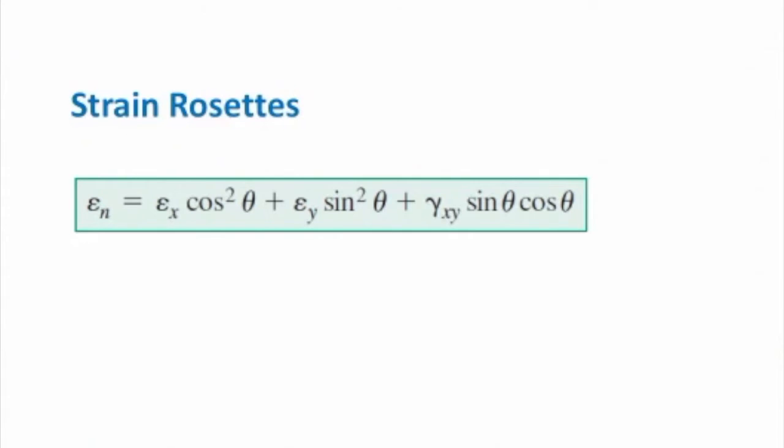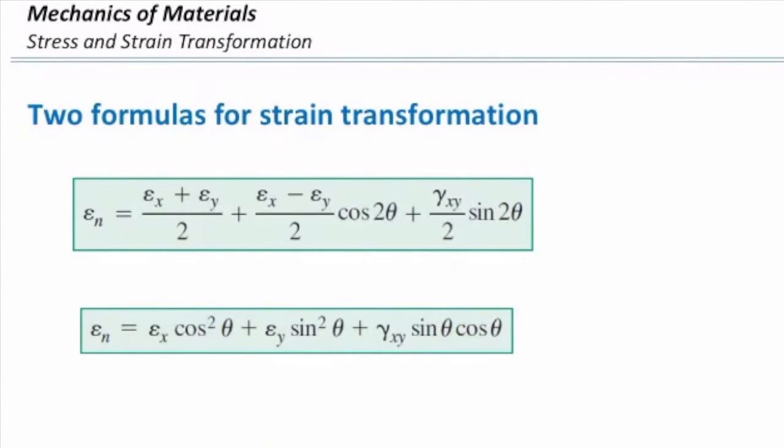The main equation, the only equation that we use to answer these kind of problems is this one. That is a strain transformation equation. Remember, this strain transformation equation is different from that I previously introduced. The difference here is instead of having two theta, I have theta. So I just used some trigonometric equations to convert this into this form, which is easier to work with for strain rosettes. So again, these two equations are similar to each other. I just used the second format because that would be easier for strain rosette problems.